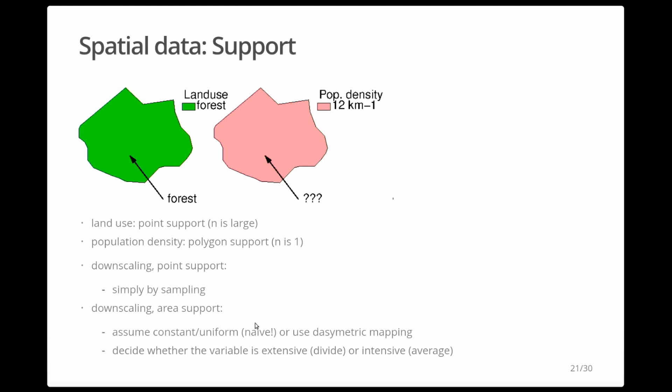You also need to decide whether a variable is extensive or intensive. Extensive variables, like population counts, become smaller when you cut the area — the parts sum to the total. Intensive variables, like population density, should remain approximately correct on average when disaggregated. Most datasets don't tell you whether they are extensive or intensive, and it's hard to infer from measurement units — it's not trivial.